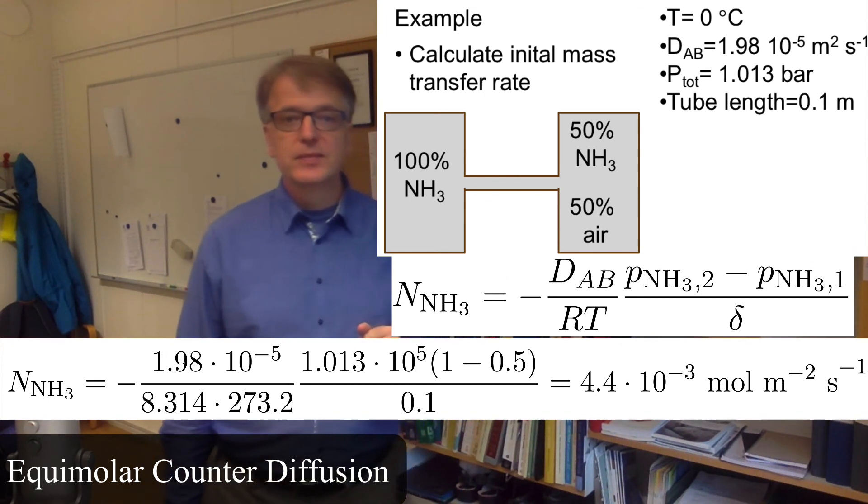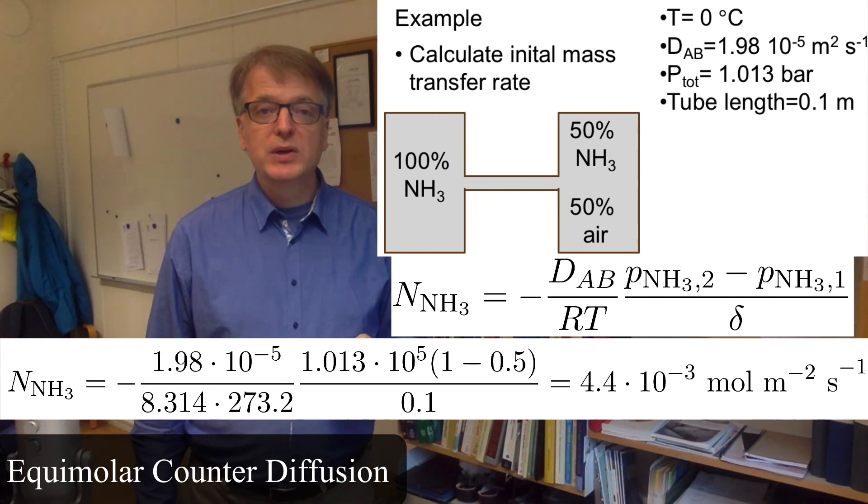We put in the numbers and we get 4.4 × 10^-3 moles per square meter per second. So that was equimolar counter diffusion.